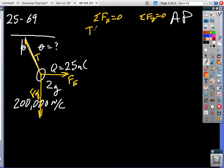So we have T sine theta equals Fe, and we have T cos theta equals Mg. Now the key here is we're going to use this.